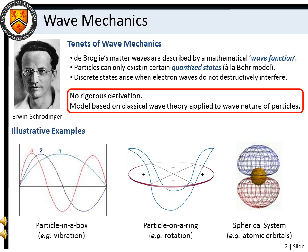There are two equivalent formulations of quantum mechanics. The first, matrix mechanics, was developed by Werner Heisenberg, and it is a mathematical approach that deals with transcendental algebra. The matrix mechanics approach is ideal for computational quantum chemistry, but it isn't particularly accessible to beginners. Instead, we will focus on the second formulation of quantum mechanics, known as wave mechanics, which was developed by Erwin Schrödinger.